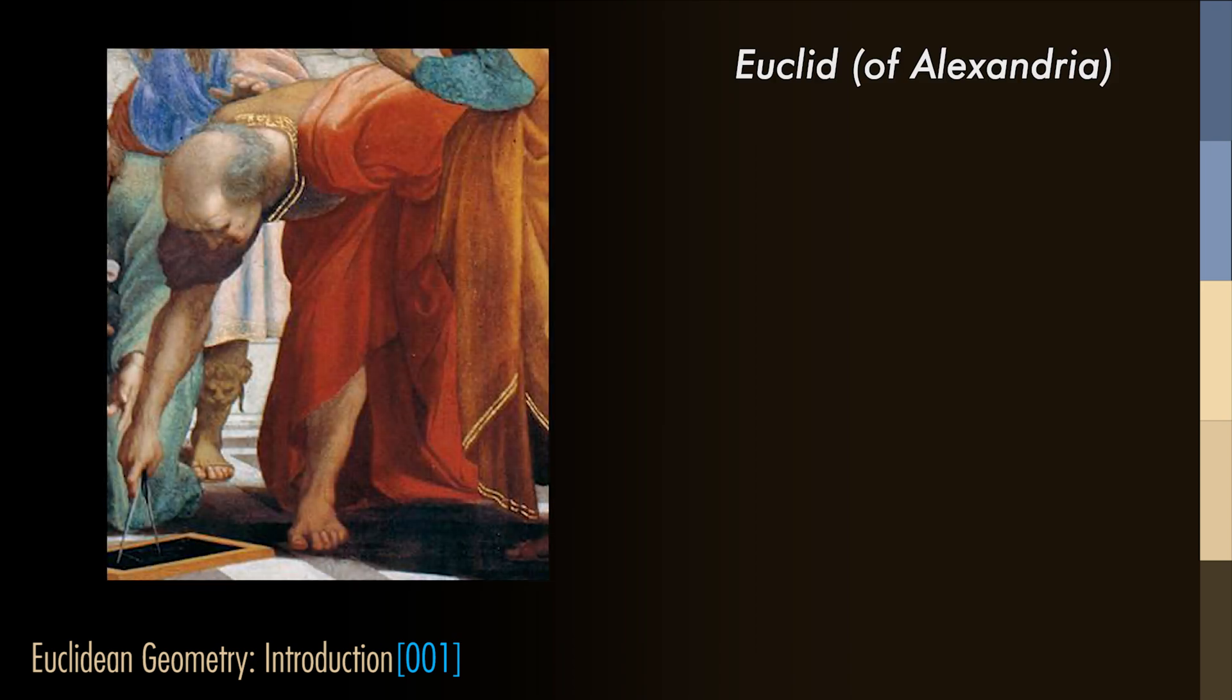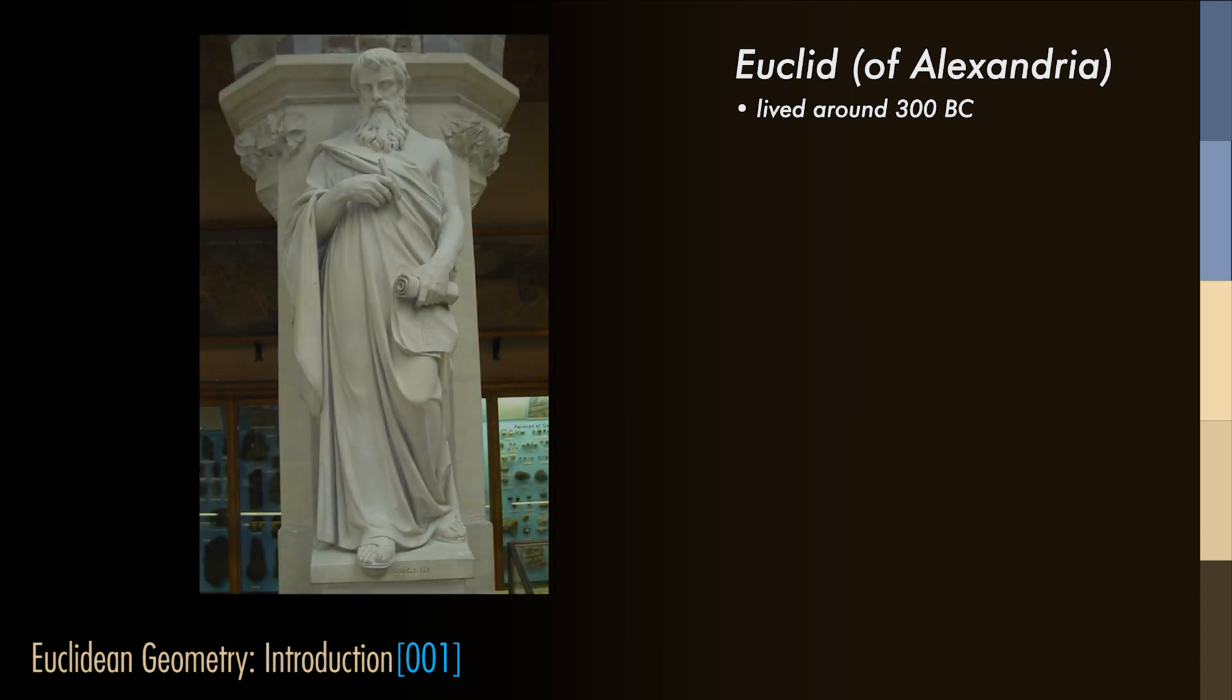This is the geometry that is treated in the first six books of the ancient mathematician Euclid of Alexandria. The works of Euclid can arguably be called the most important mathematical textbook ever written. Only the Bible has seen more reprints.